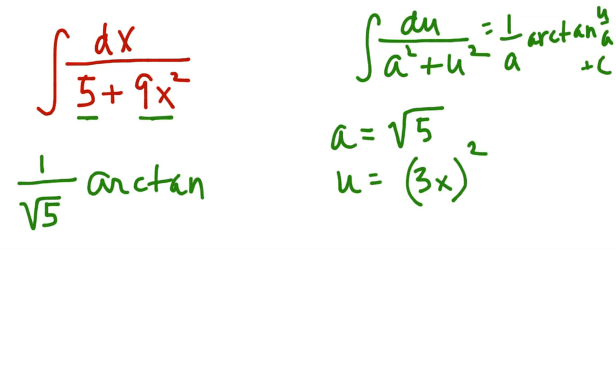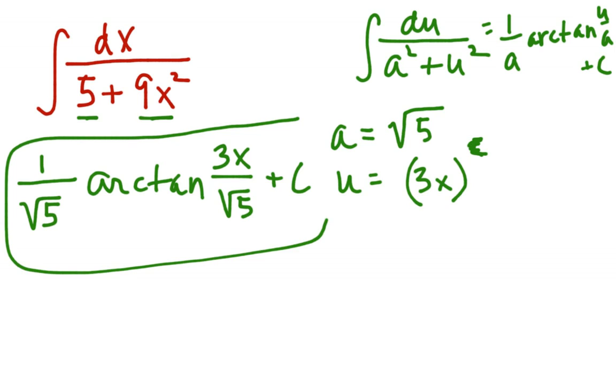1 over a, we said a was square root of 5, times arctan of u. So what did we say u was? u has to be 3x, right? I shouldn't really have written that, but that's how I got the 9x squared, right? So my u is 3x over a, which is square root of 5, plus a constant. And that's it.